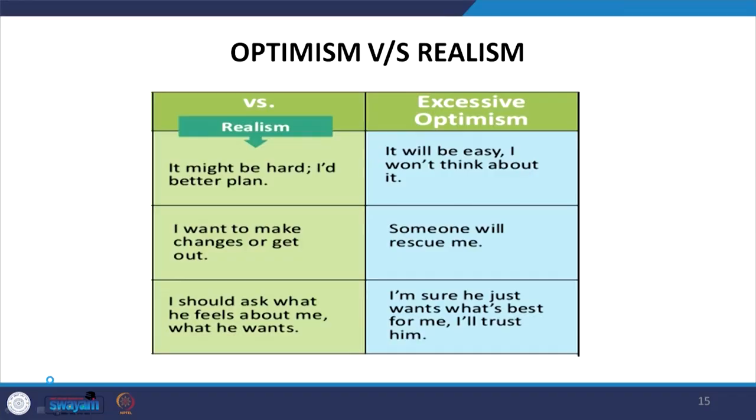One should be realistic — 'I should ask what he feels about me, what he wants' — rather than blindly trusting 'I am sure he just wants what is best for me.' That kind of blind trust is excessive optimism. We should be clear: understand what realism is, then apply either personal optimism or self-efficacy optimism, and avoid excessive optimism.